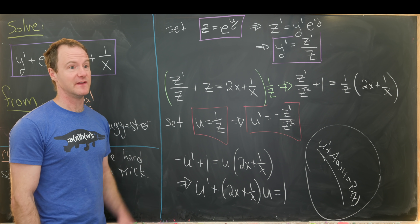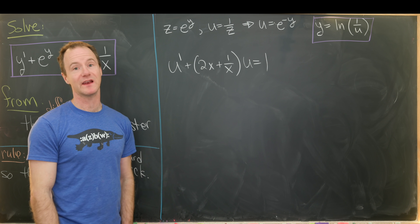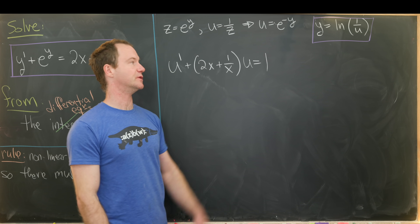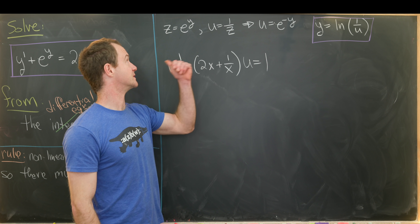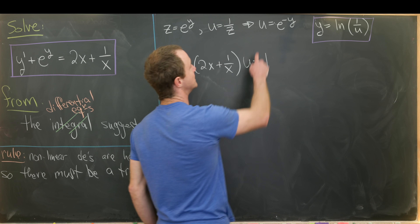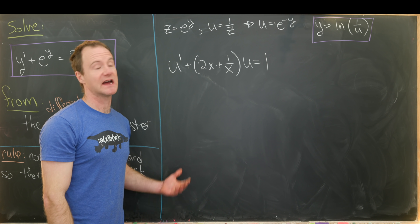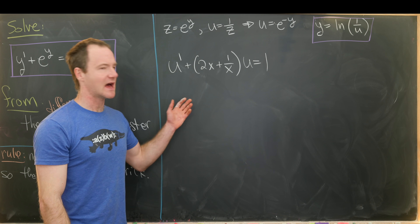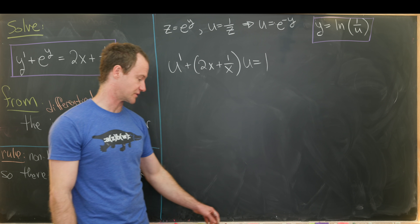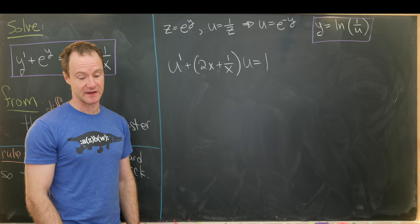To recap from the previous steps: through two substitutions we arrived at the linear first order ODE u prime plus (2x plus 1 over x) times u equals 1. The substitutions were z equals e to the y and u equals 1 over z, so altogether u equals e to the minus y, which means y equals the natural log of 1 over u. We now attack this as a standard first order linear ODE by looking for an integrating factor.